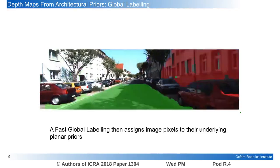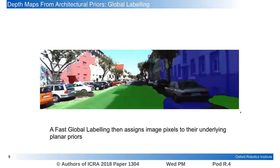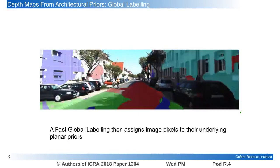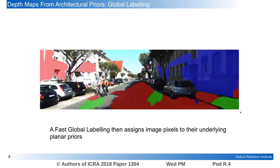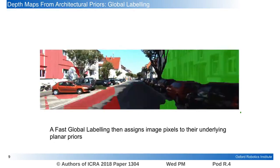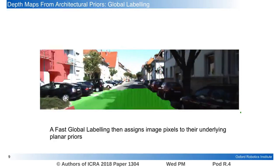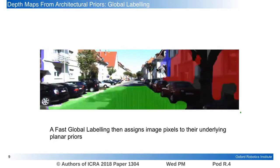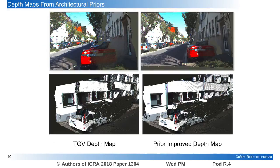It then remains to label each image pixel according to its membership to the planar priors. This is performed via fast energy minimization over the photo-consistency cost in multiple views. From the labeling, a prior-improved depth map is revealed, which appears visually better when compared to the original TGV depth map, with walls and road surfaces appearing flat and objects well separated, as seen in the comparison above.